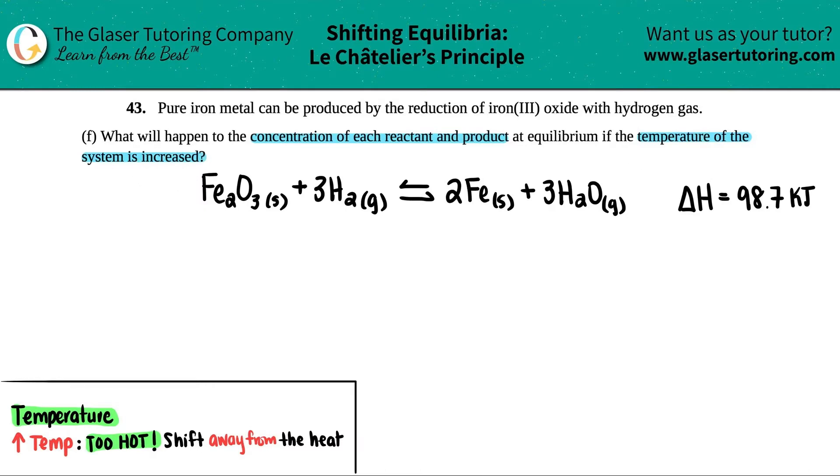Now the first thing is with equilibrium and Le Chatelier's principle, if you're talking about temperature, it's going to make it so much easier if you immediately attack this delta H value. So what I mean by that is I want to basically express this in the balanced equation by saying where is the heat going to be on? Is the heat going to be on the reactant side or is it going to be on the product side?